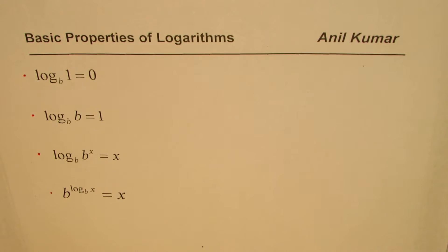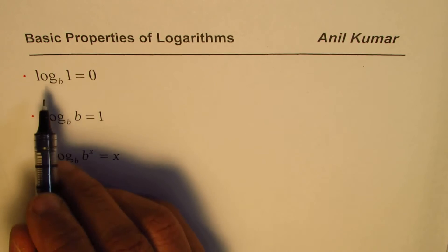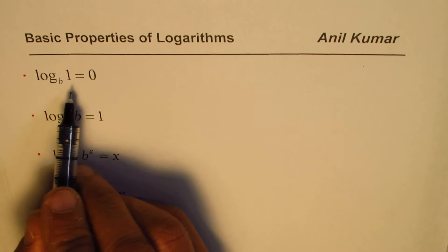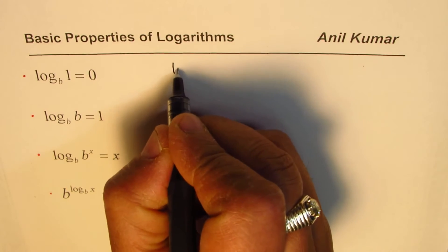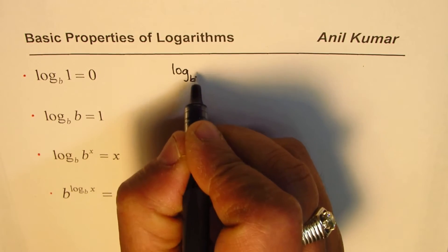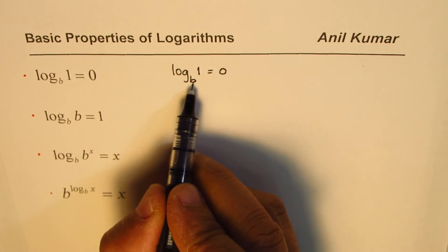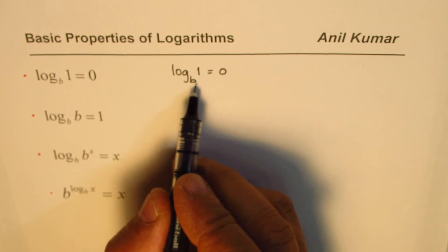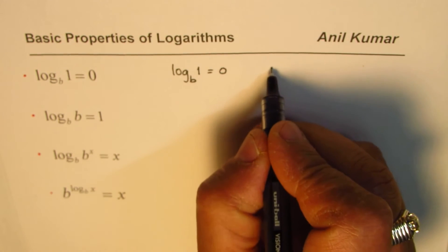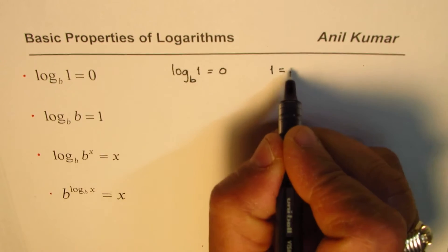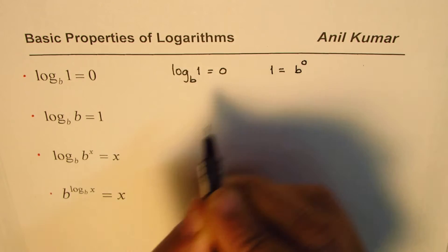These are the properties which we are going to explore and then use in following videos. Let's begin with the very first one: log to the base b of 1 equals 0. We can write this in exponential form, so 1 equals b to the power of 0.